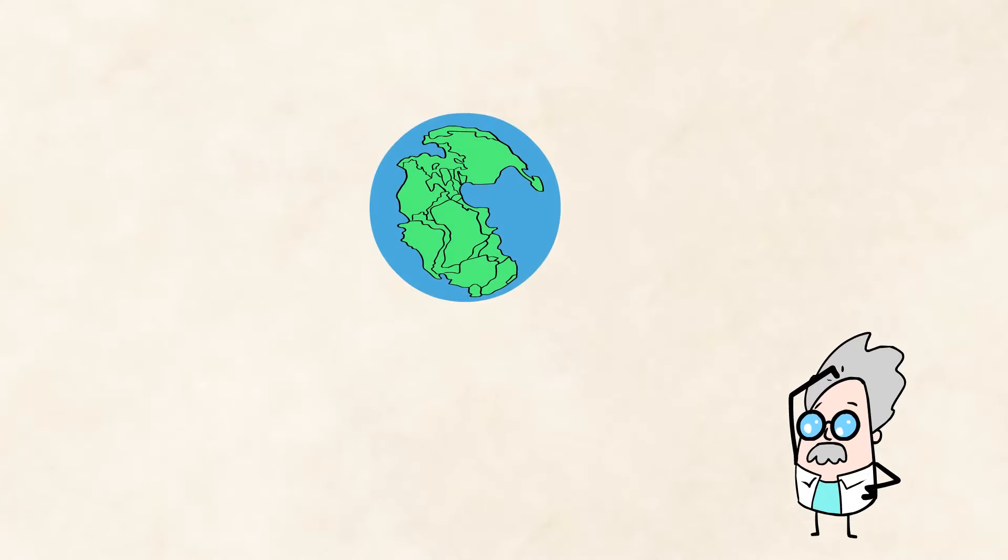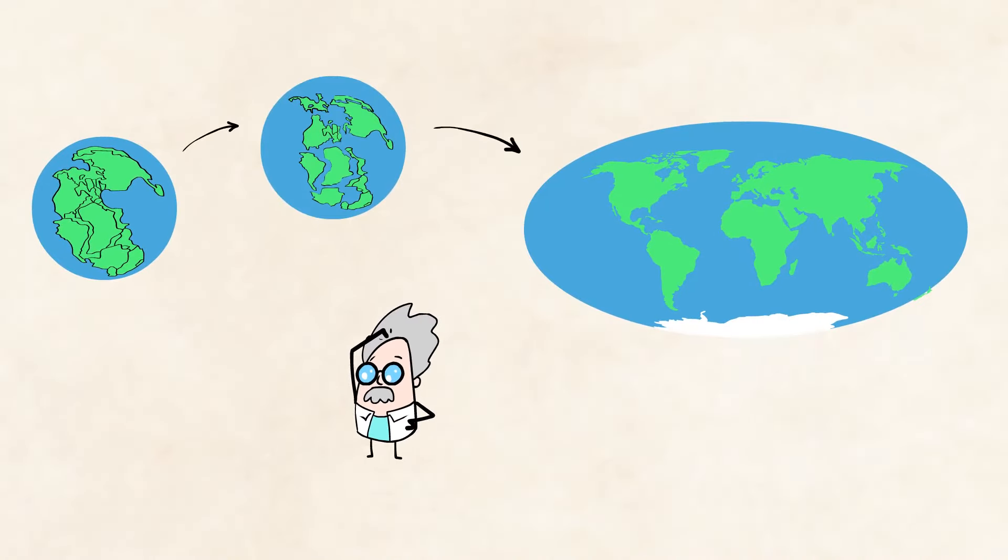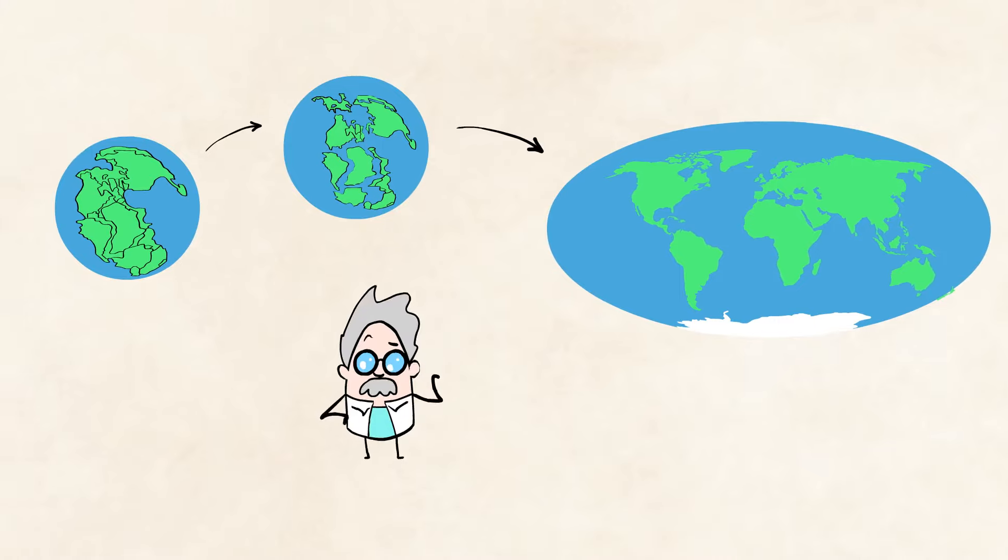Scientists believe that long ago, these seven continents were actually one giant landmass. And over millions of years, they broke apart little by little and shifted to where they are located today.